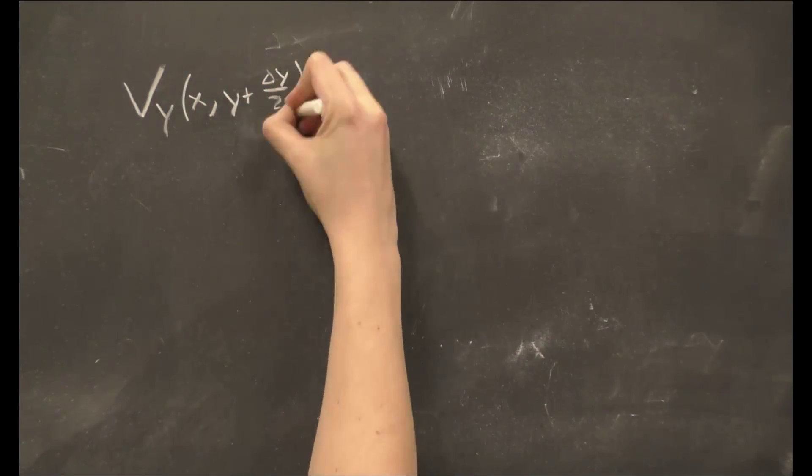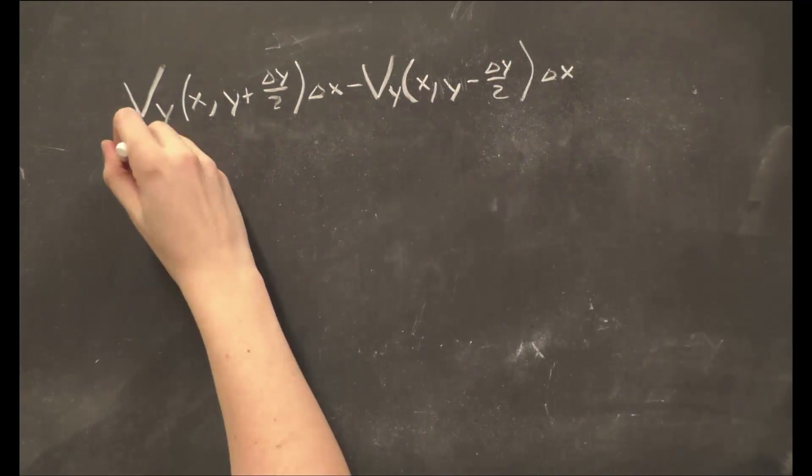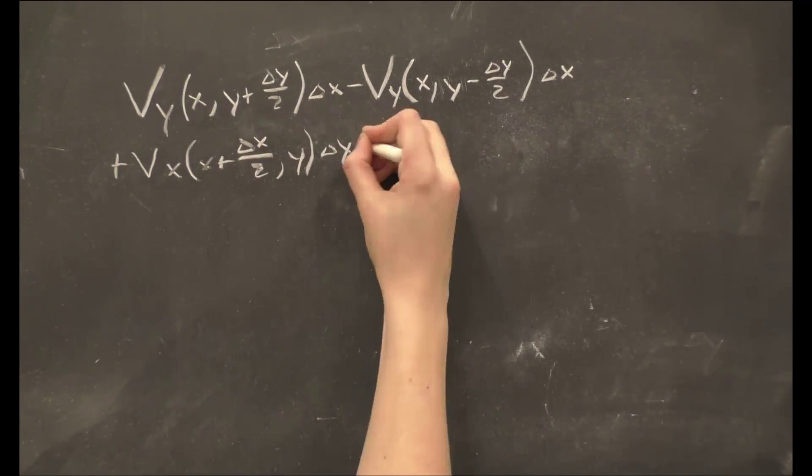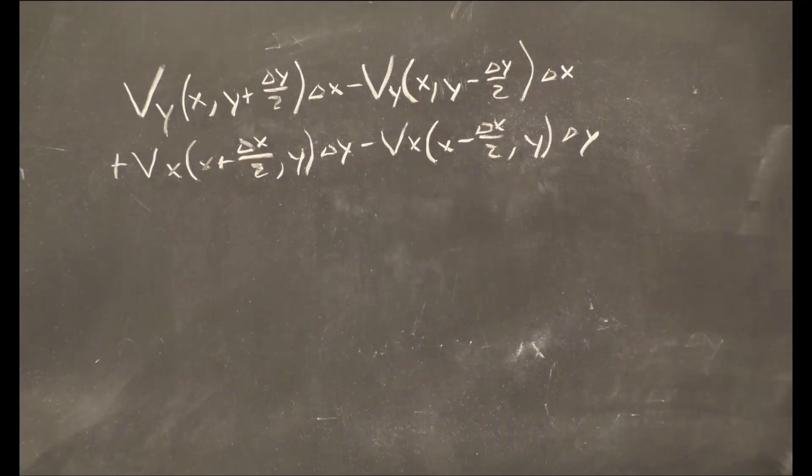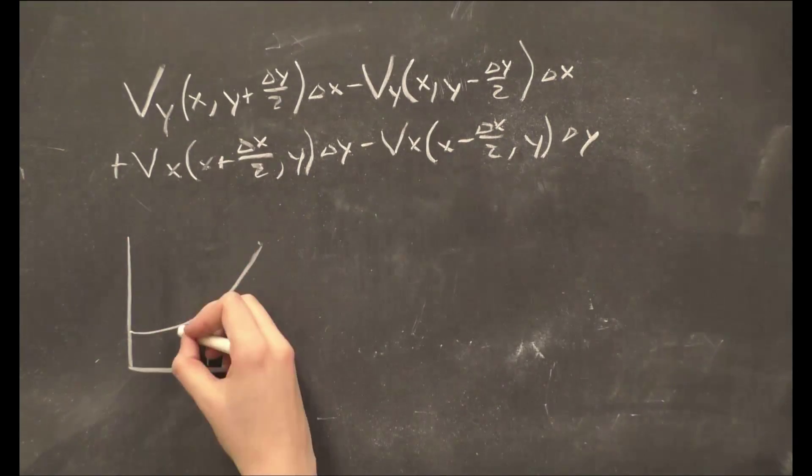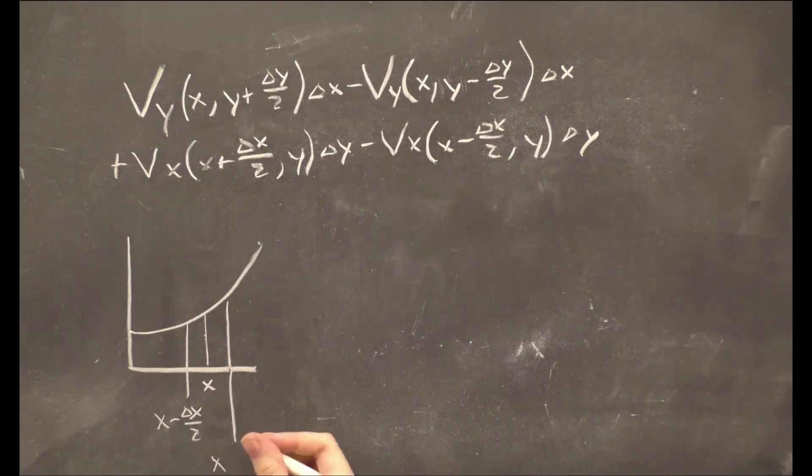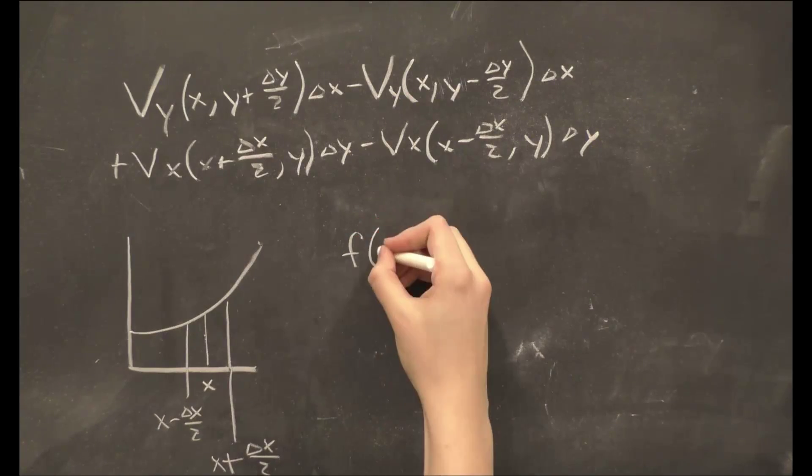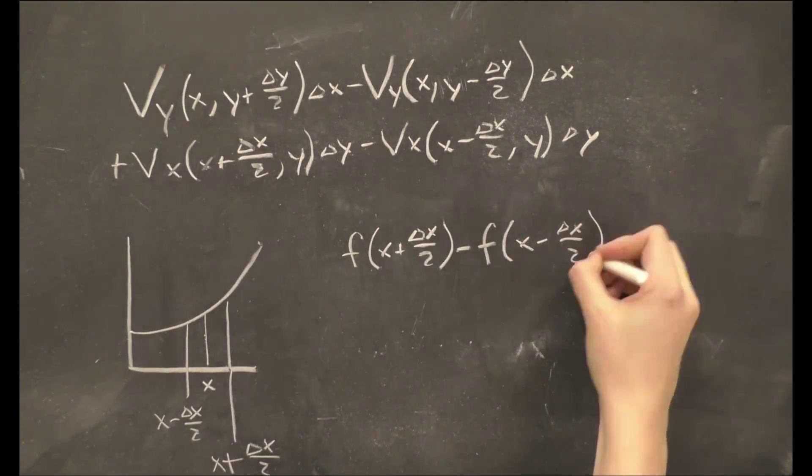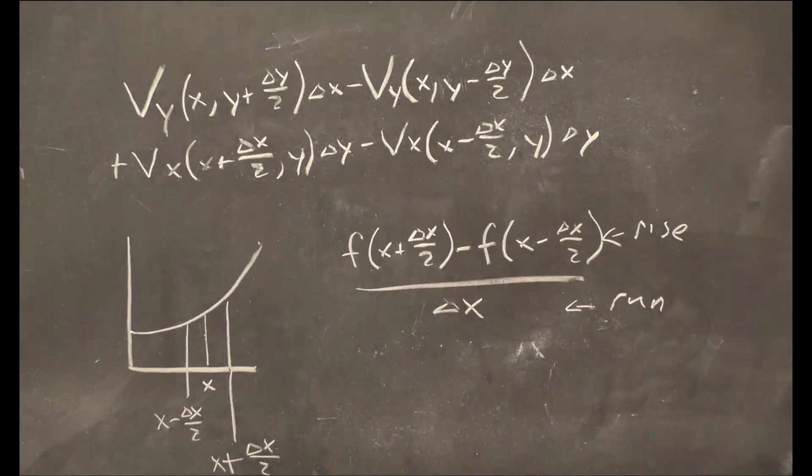We rearrange these to put the Vy's and Vx's together. Examining these terms, we can see that they are equivalent to derivatives, since looking at some function f of x, f of x plus delta x minus f of x minus delta x divided by delta x is equivalent to rise over run, or the derivative of f.